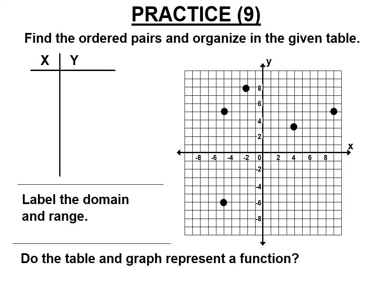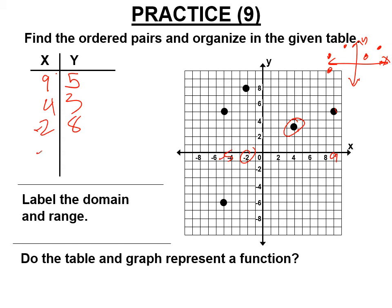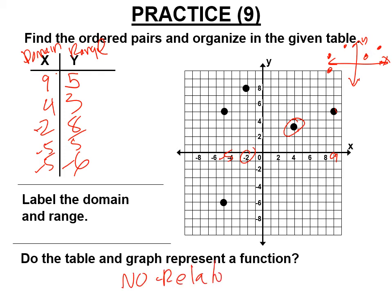For practice: find the ordered pairs from the graph — (9, 5), (4, 3), (-2, 8), (-5, 5), (-5, -6). X is the domain, y is the range. We can see duplicate x-values (-5 appears twice), so this is a discrete relation. Without the table, you could also draw a vertical line to find the duplicates.